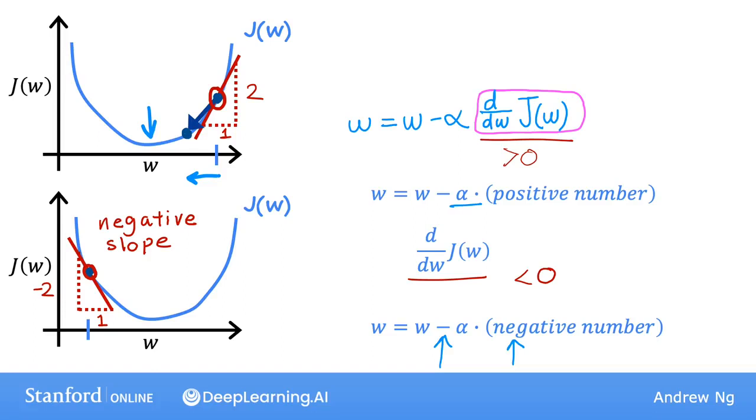Because subtracting a negative number is the same as adding a positive number to w. So this step of gradient descent causes w to increase, which means you're moving to the right of the graph and your cost J has decreased down to here.